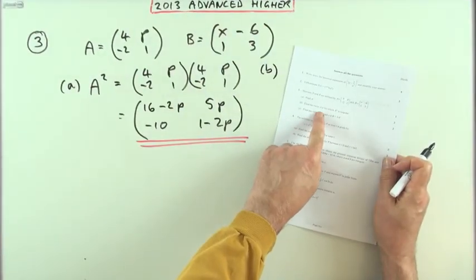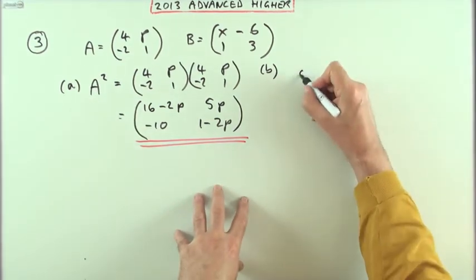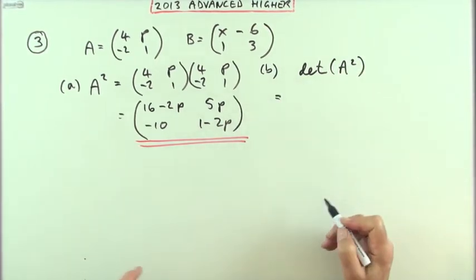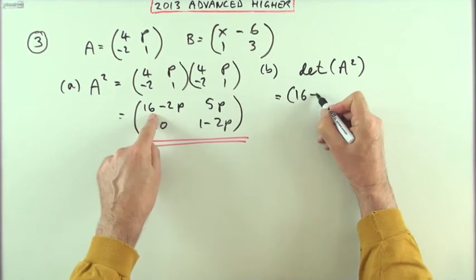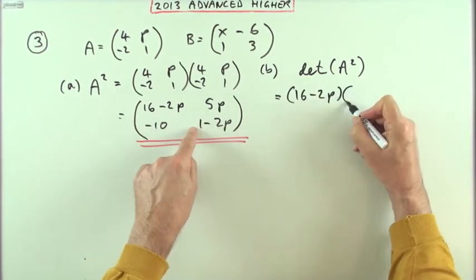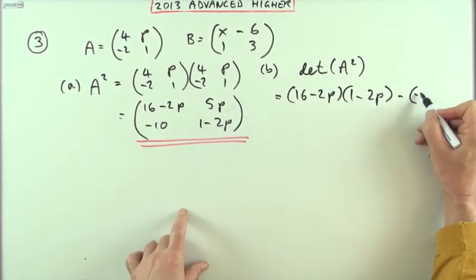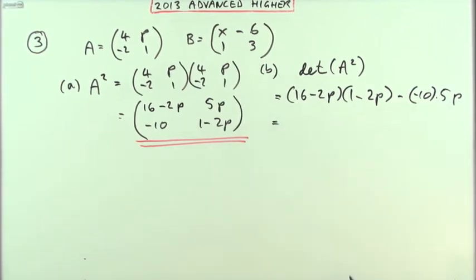Part b: find the value of p for which this matrix A squared is singular. Well that means I'll need its determinant. What's the determinant of A squared? That'll be the main diagonal, which is (16 minus 2p) times (1 minus 2p), minus the other diagonal, which is negative 10 times 5p.